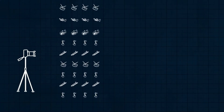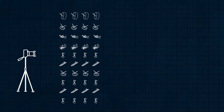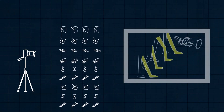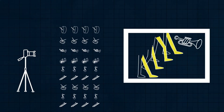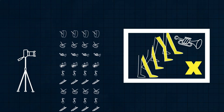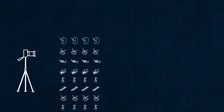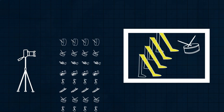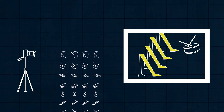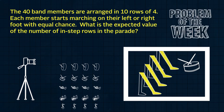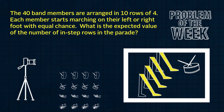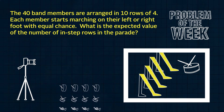You are photographing your school's marching band during the Memorial Day Parade. There are 40 members of the band arranged in 10 rows of four. You are hoping to get a photo of a row of four band members all in perfect step, but you happen to know that the musicians each randomly decide to start marching on their left foot or their right foot at the beginning of the parade, 50-50. What is the expected value of the number of in-step rows in the parade?